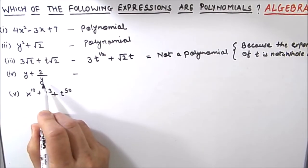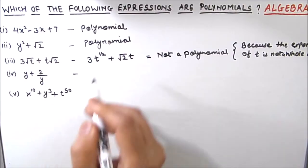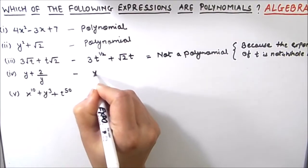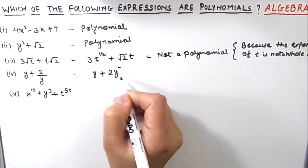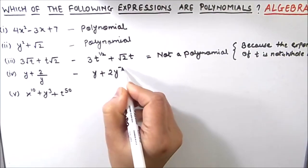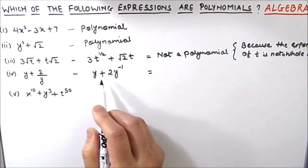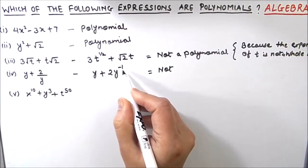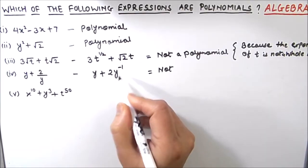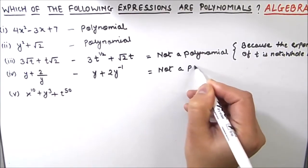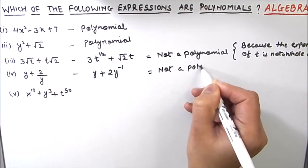The next expression is y plus 2 divided by y. We can write this as y plus 2y to the power negative 1. This expression is also not a polynomial because we have a negative power of the variable, which is not valid for a polynomial.